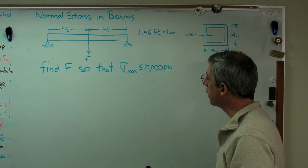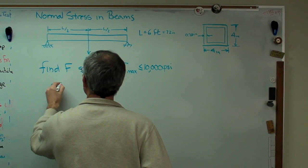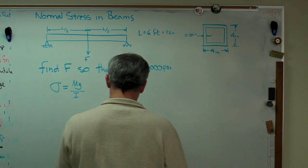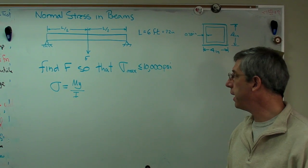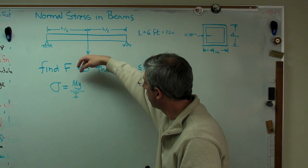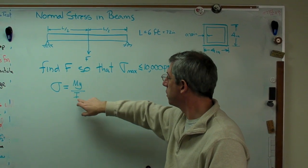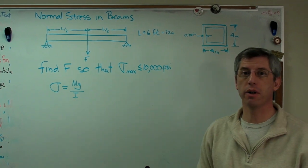To get started, we're going to need the governing expression for normal stress in the beam. Normal stress due to bending. So we know this is 10,000 psi. We're going to have to figure out the moment, Y we're going to get from geometry of the cross section, and I we're going to get from geometry of the cross section.